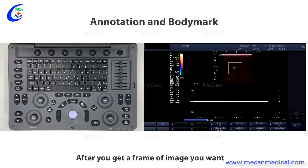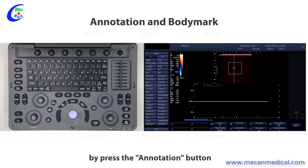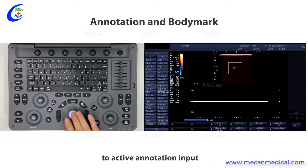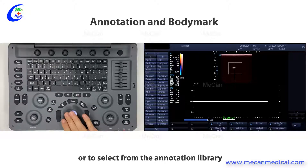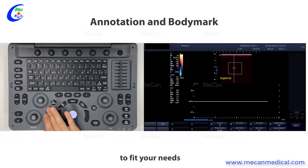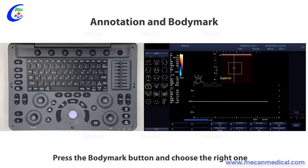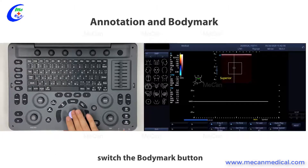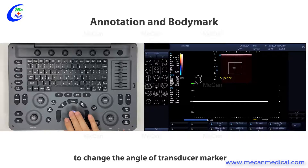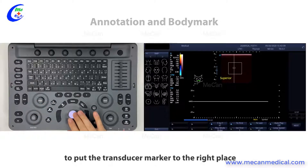After you get a frame of the image you want, you can add a comment by pressing the annotation button to activate annotation input or select from the annotation library. You can also select the right application to fit your needs. Press the body mark button and choose the appropriate one. Switch the body mark button to change the angle of the transducer marker, and move the trackball to place the transducer marker in the right position.